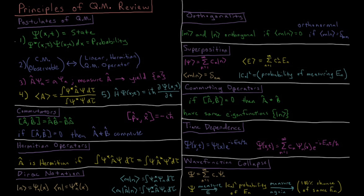The first postulate is that the wave function specifies the entire state of the system. That is, if we have a wave function specified in all spatial dimensions and time, then any measurable property is known. The interpretation is that the complex conjugate of the wave function times the wave function times some small region of space gives the probability of finding a particle in that small region of space.